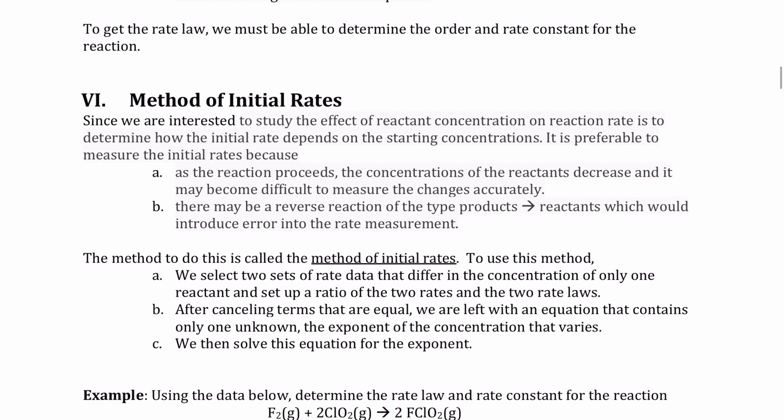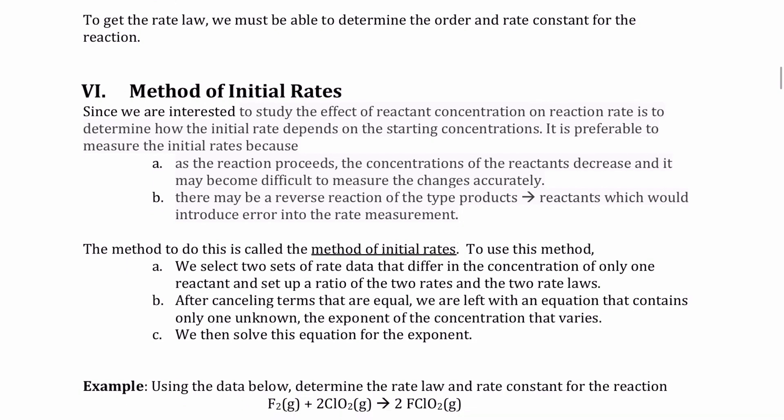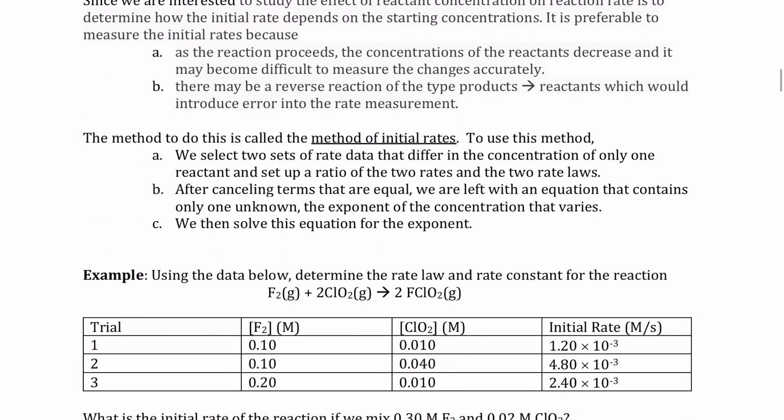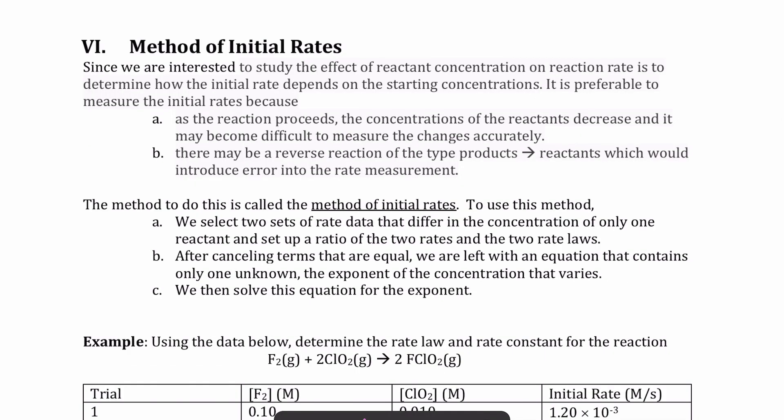Now that we understand the meaning of the rate constant and order, and that we need those numbers to complete our rate law equation, we need to think about how we find both of those quantities. The way we're going to do that is something called the method of initial rates — a technique we use to determine both the values of order and rate constant.